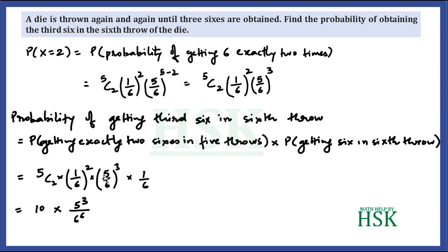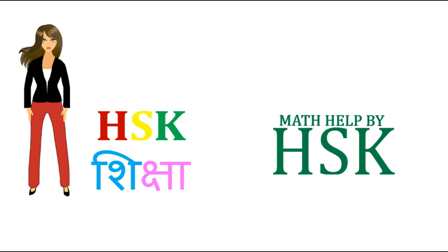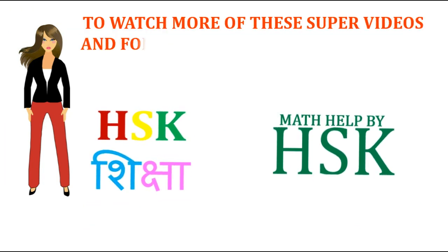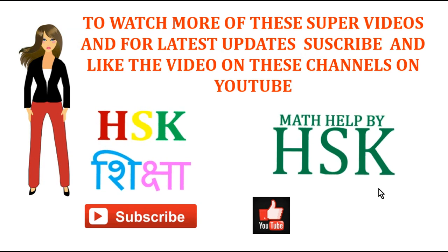5C2 equals 10. In the numerator we get 5^3, and in the denominator we get 6^6, since (1/6)^2 contributes 6^2, (5/6)^3 contributes 6^3, and the extra 1/6 contributes 6^1, giving 6^6 overall. This gives 1250/46656, which simplifies to 625/23328 — the required answer. Thanks for watching! Subscribe and like the videos on YouTube channels HSK Shiksha and MathElpHSK.